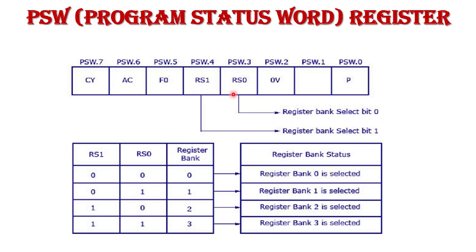How do these bits select a particular register bank? The combinations are: if RS1 and RS0 are 0,0 — Register Bank 0 is selected. If the combination is 0,1 — Register Bank 1 is selected. If the combination is 1,0 — Register Bank 2 is selected. And if the combination is 1,1 — Register Bank 3 is selected. In this way we select a particular register bank in the 8051 microcontroller.